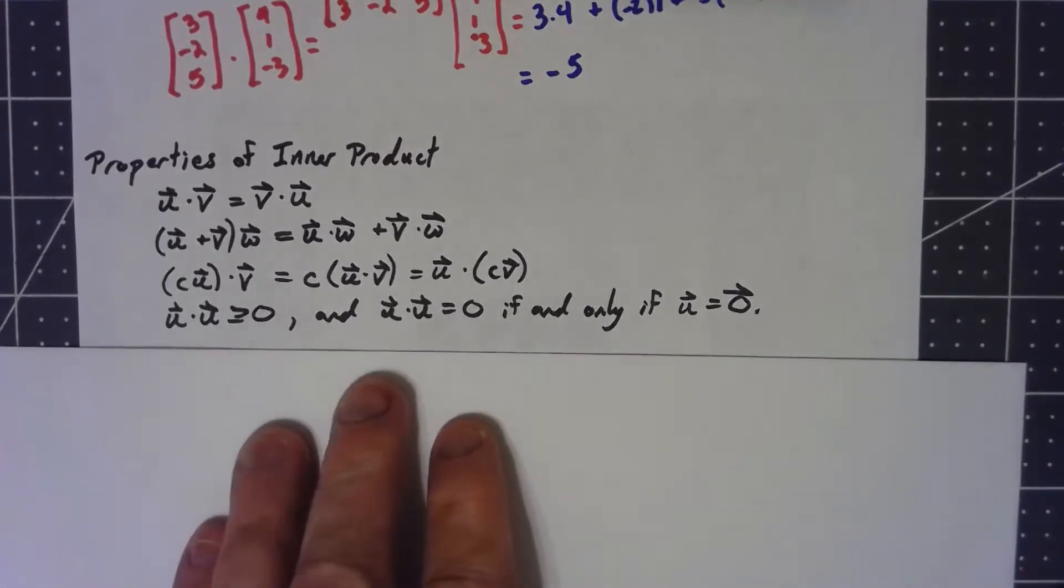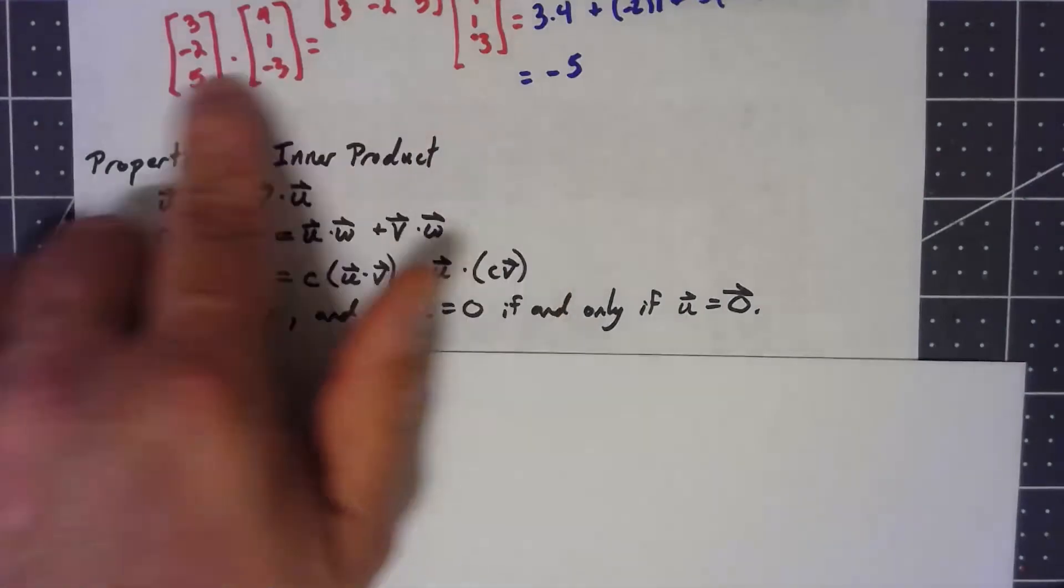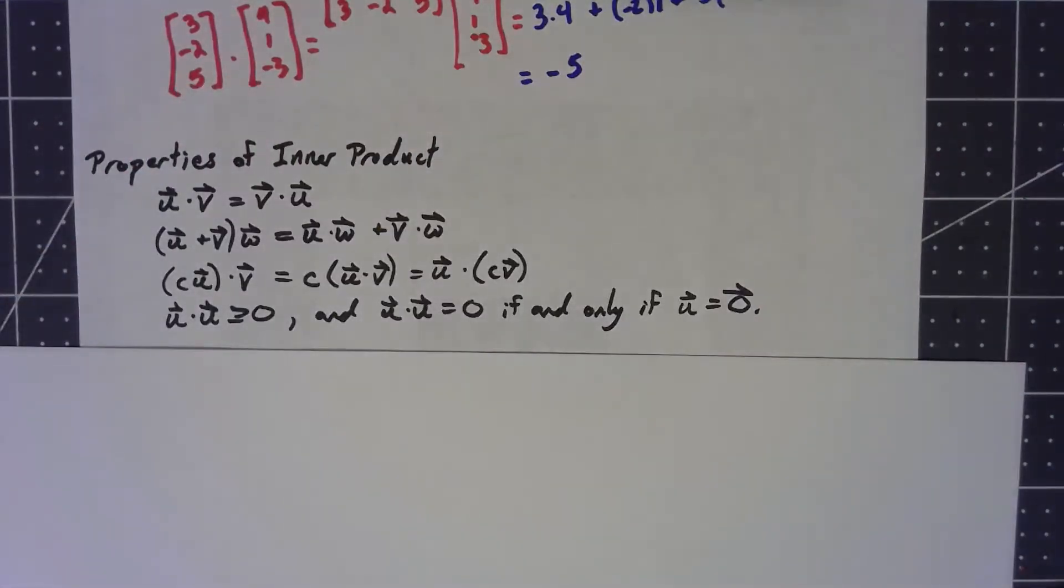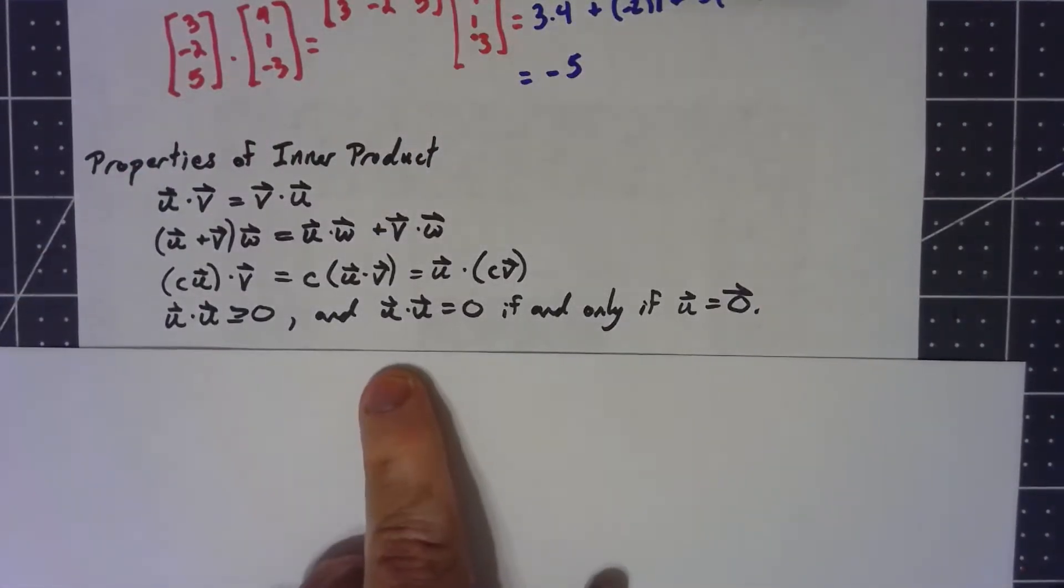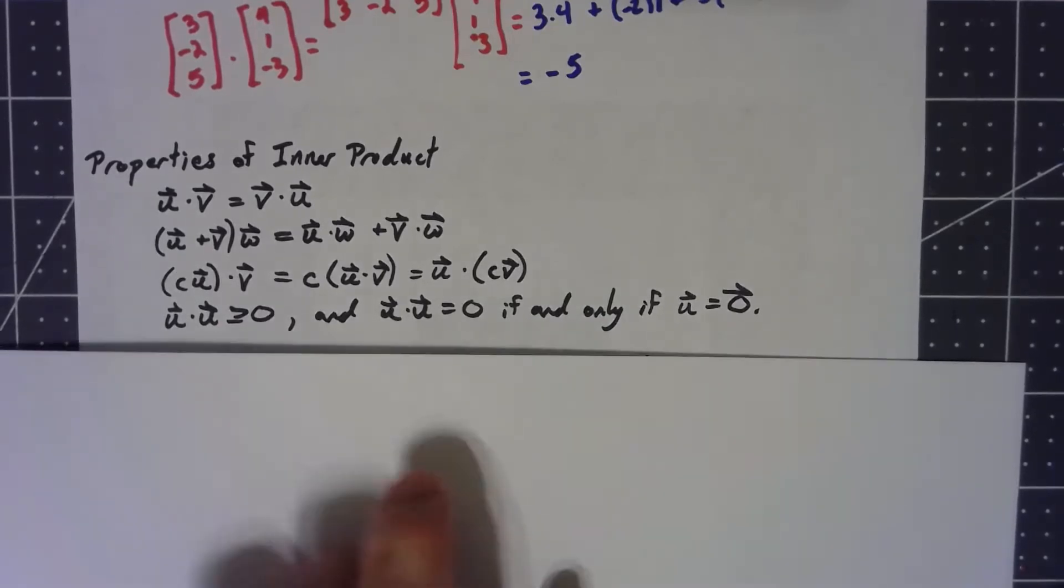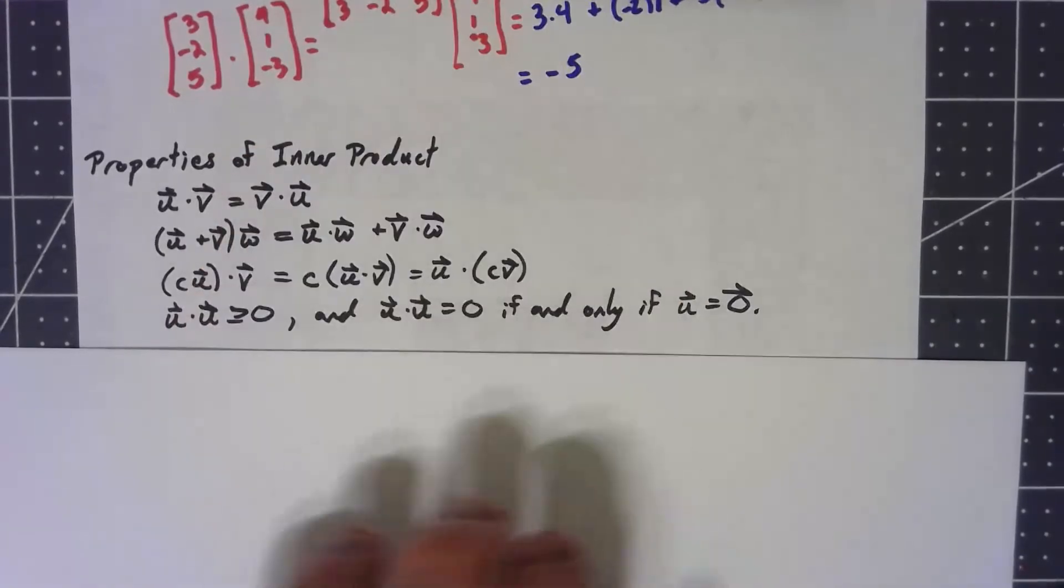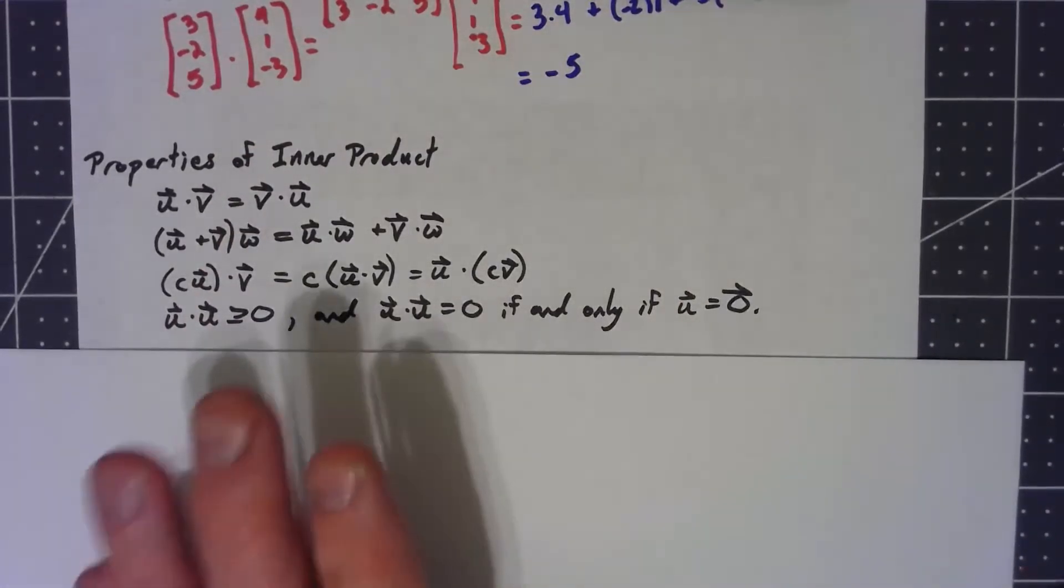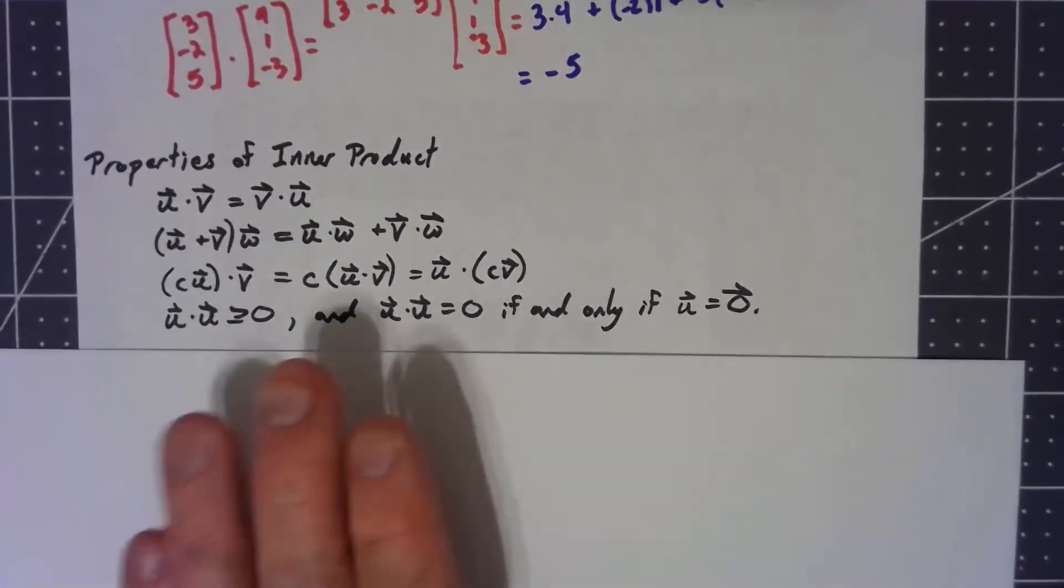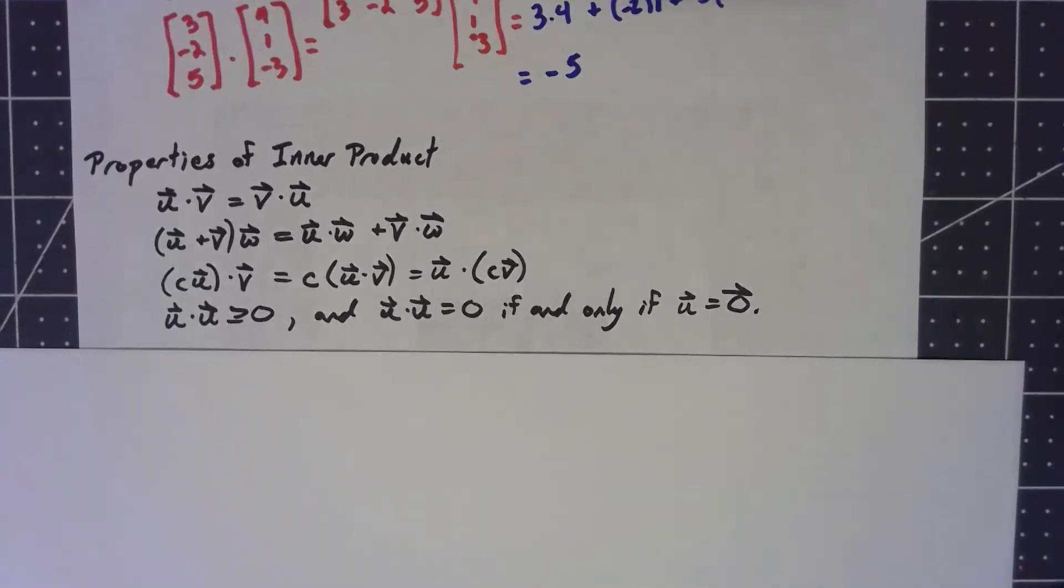All these properties are easy to show if we just start thinking about what they're doing on components. I want to mention though, that while we're only going to be focusing on this particular inner product, actually anything that satisfies these four properties can be called an inner product. And sometimes there are reasons for using other inner products other than the sort of default dot product one.